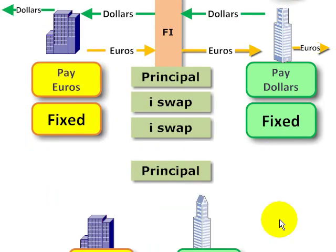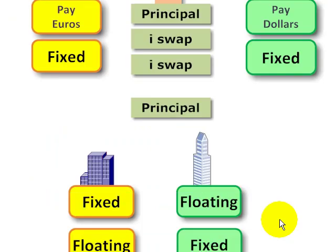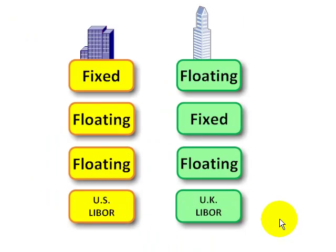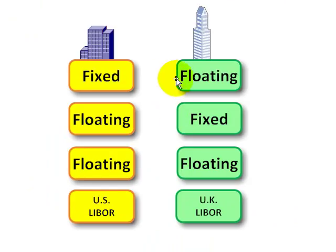There are other variations on the currency swap. The exchange can be a fixed rate for a floating rate, or vice versa, one counterparty can pay a floating rate in exchange for a fixed rate in the other currency. Both of these are called cross-currency swaps. Also, the counterparties can exchange a floating rate for a floating rate.